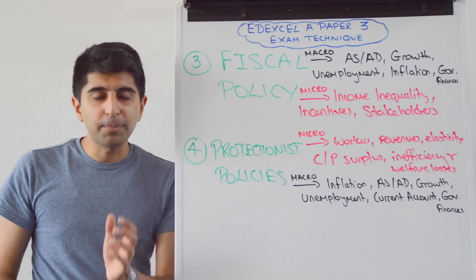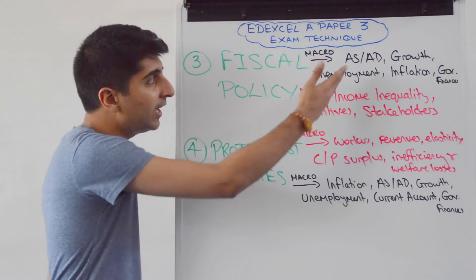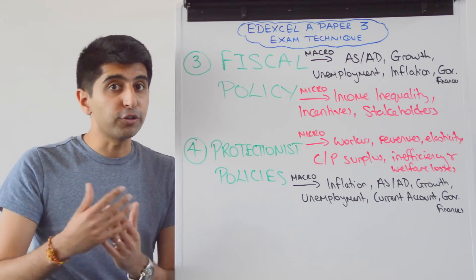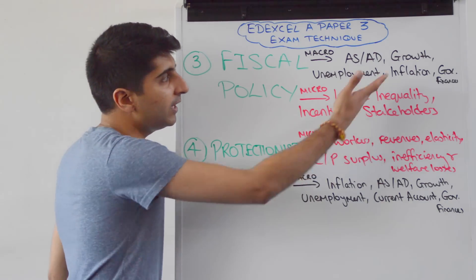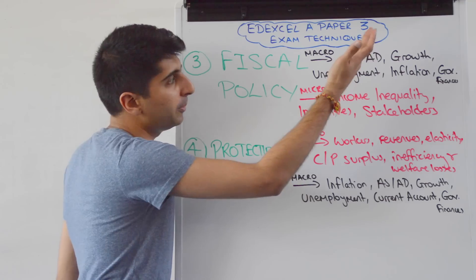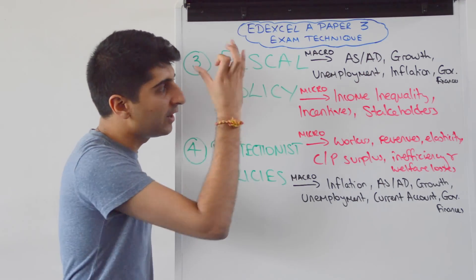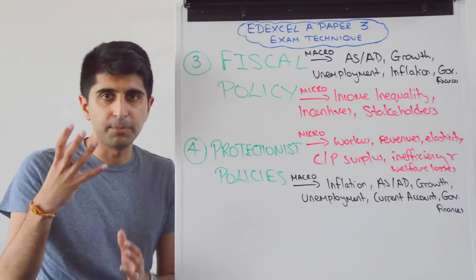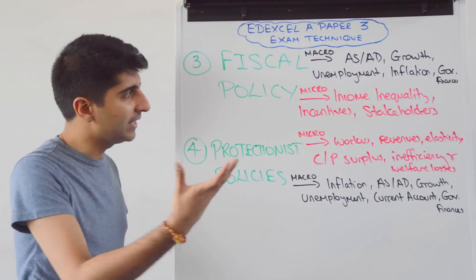Fiscal policy — the natural place to go to first is macro-effects. AS and AD, shifting AD of course, but also shifting LRAS potentially depending on the fiscal policy. The impact on growth as a result, unemployment, inflation, and the impact on government finances — all very logical and very obvious macro-effects to go to. That should probably be the first thing that comes into your head.